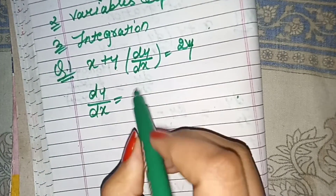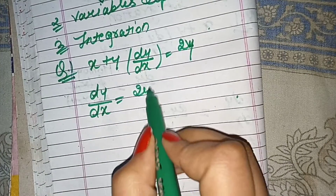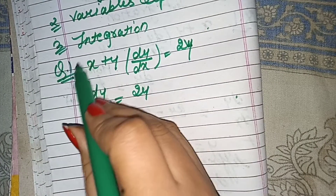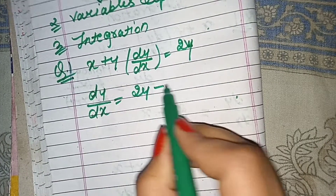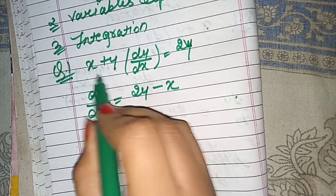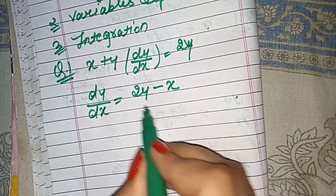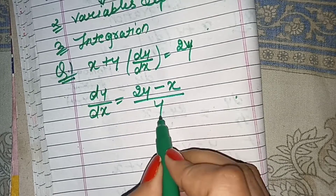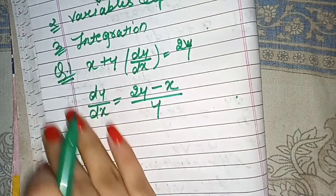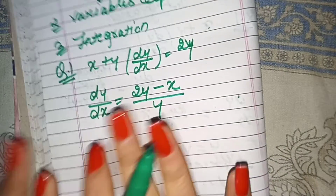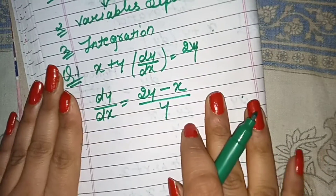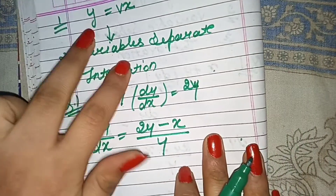We will write dy over dx on the left-hand side and take the rest to the right-hand side. So 2y is here, we need minus, y is here, multiply, so divide — like this. Now we have made our equation into homogeneous form.